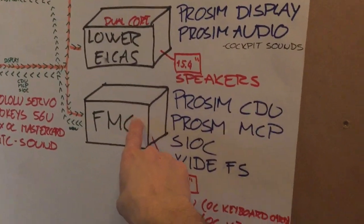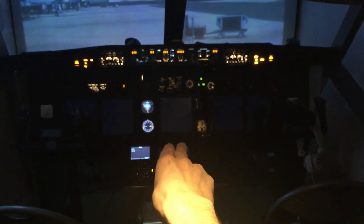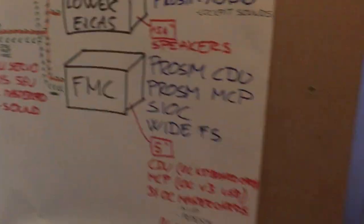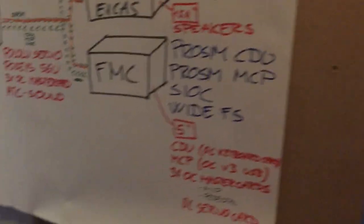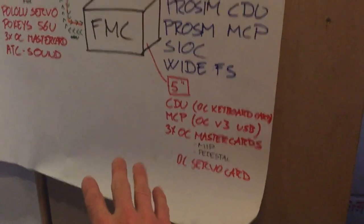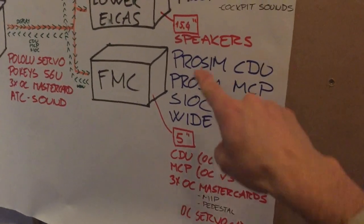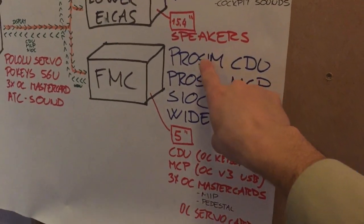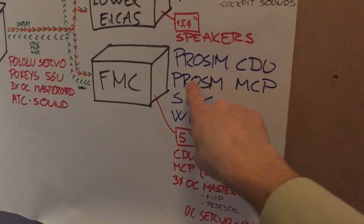The last computer is physically placed behind the screens because I was not able to extend the wire from the autopilot unit far enough to reach where the rest of the computers are. It runs the CDU program for the FMC.